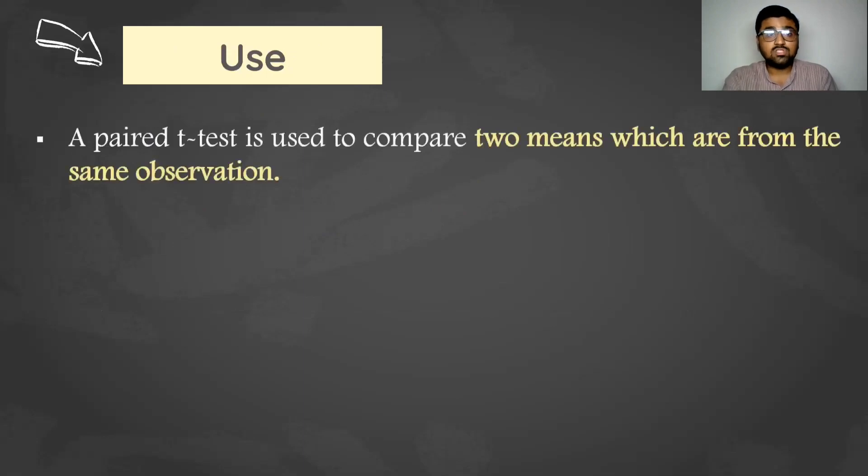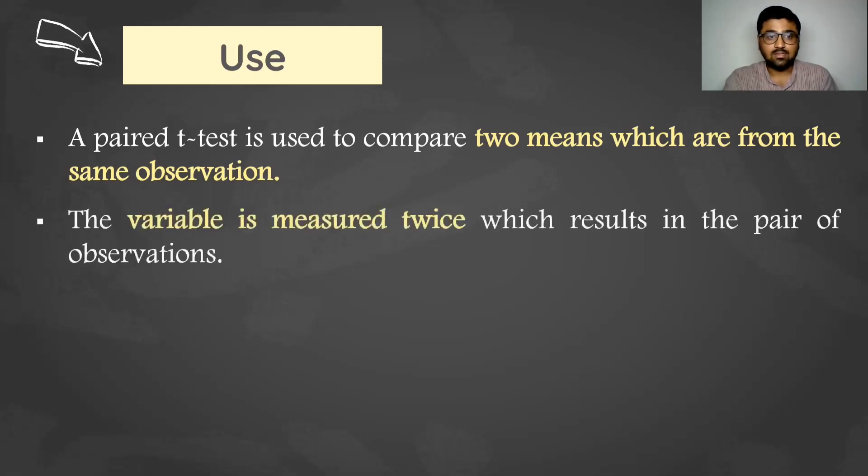Now we can use paired t-test to compare two means which are from the same observation. The variable is measured twice which results in the pair of observations.